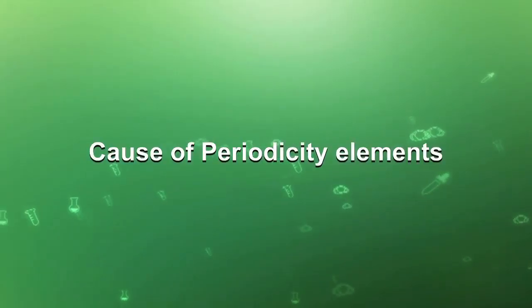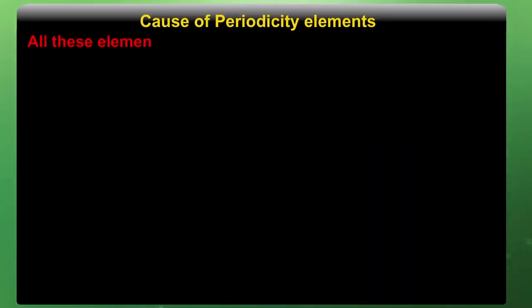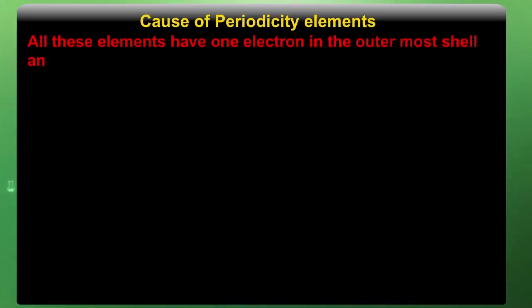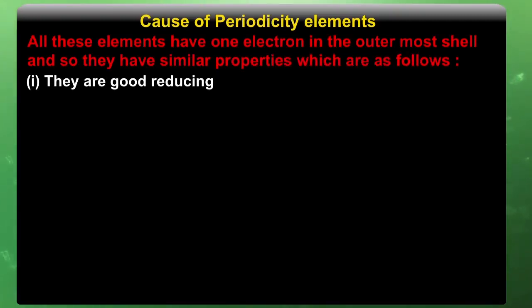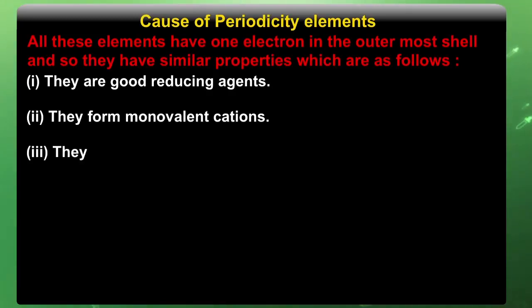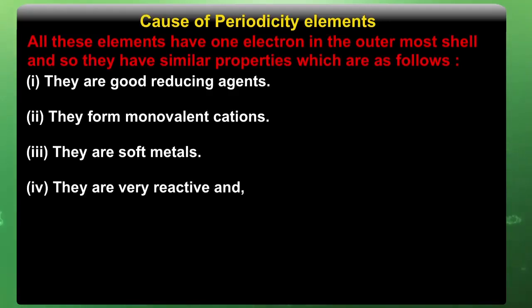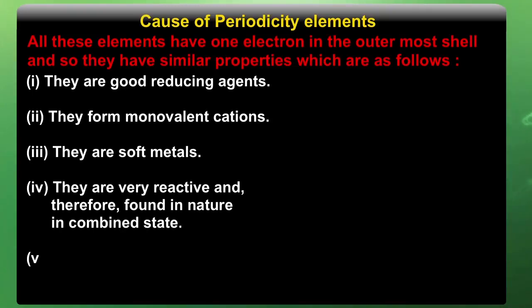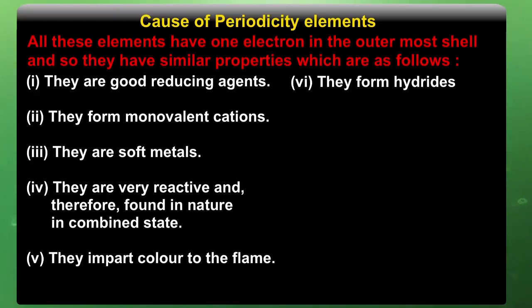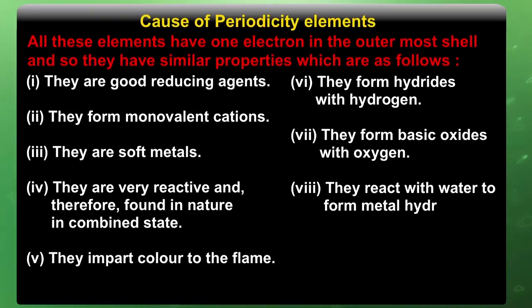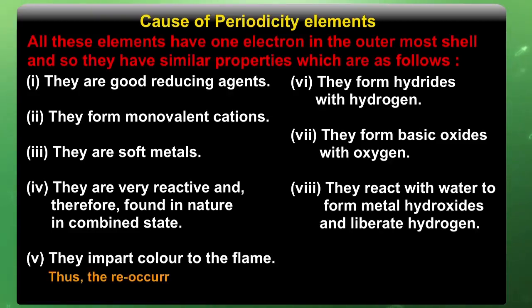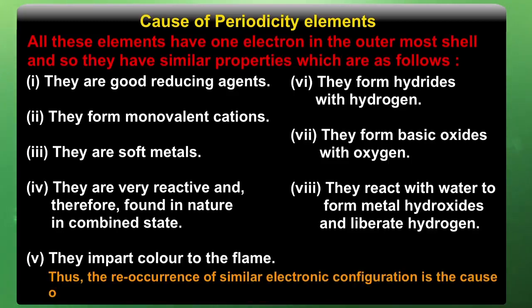Let us understand what is the cause of periodicity of elements. All these elements have one electron in the outermost shell, and so they have similar properties: they are good reducing agents, they form monovalent cations, they are soft metals, they are very reactive and therefore found in nature in combined state. They impart color in the flame, they form hydrides with hydrogen, they form basic oxides with oxygen, and they react with water to form metal hydroxide and liberate hydrogen. Thus, the co-occurrence of similar electronic configuration is the cause of periodicity in properties of elements.